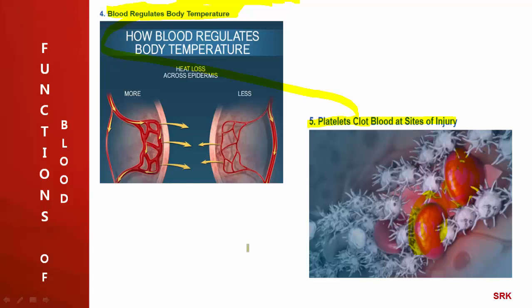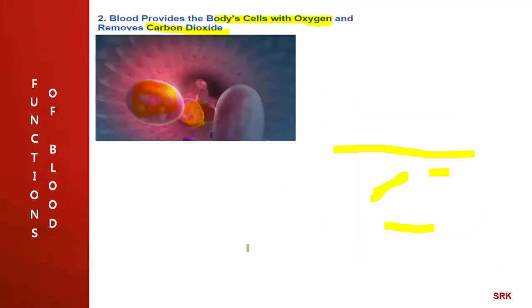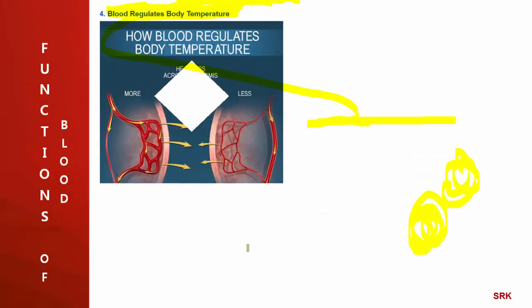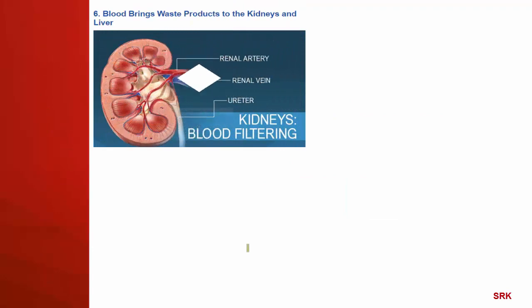To summarize the functions: blood provides oxygen and removes carbon dioxide; it transports nutrients and hormones; it maintains body temperature; platelets help in clotting of blood at the site of injury. One more very important function: blood brings waste products to the kidney and liver.